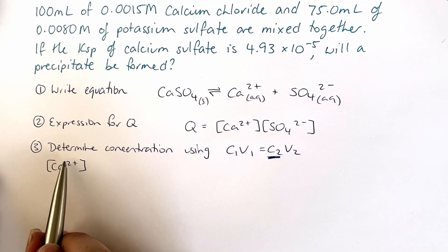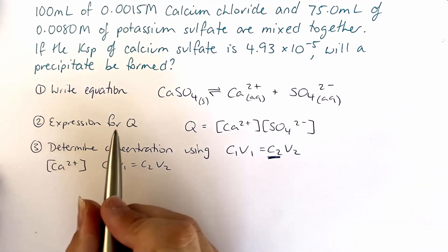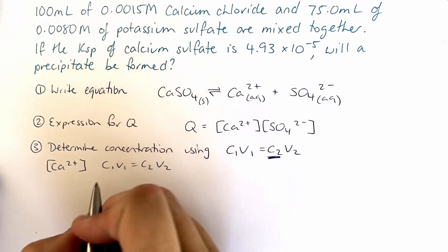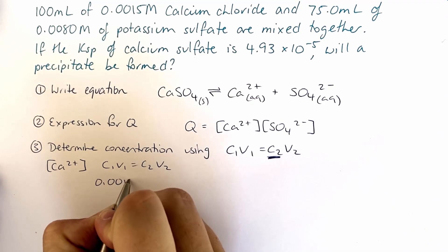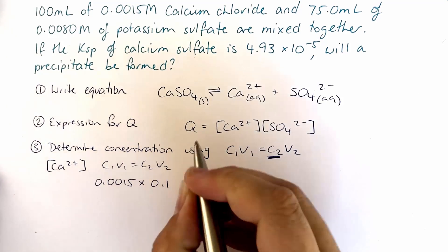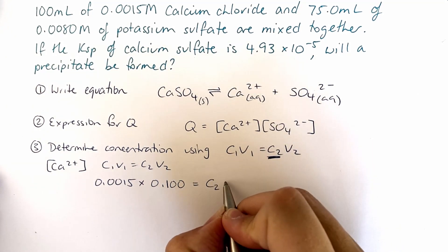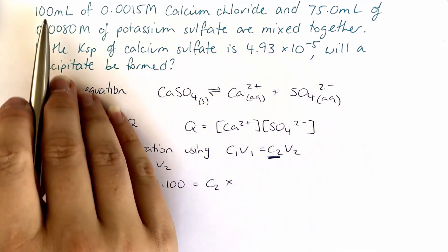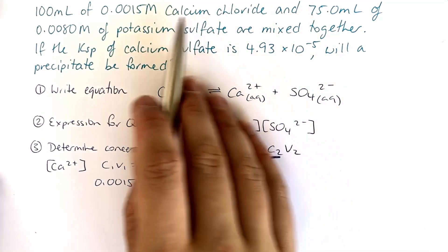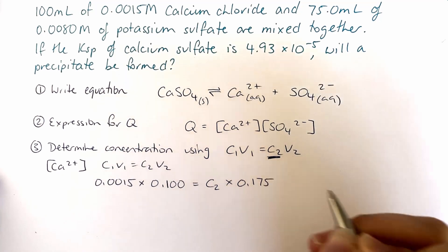So for calcium, our calcium ions, our initial concentration is here with the calcium chloride, so it's 0.0015 multiplied by the initial volume which is 100 mL. We're trying to calculate the concentration and our final volume is the 100 mL plus the 75 mL of the potassium sulfate, so our final volume is 0.175.